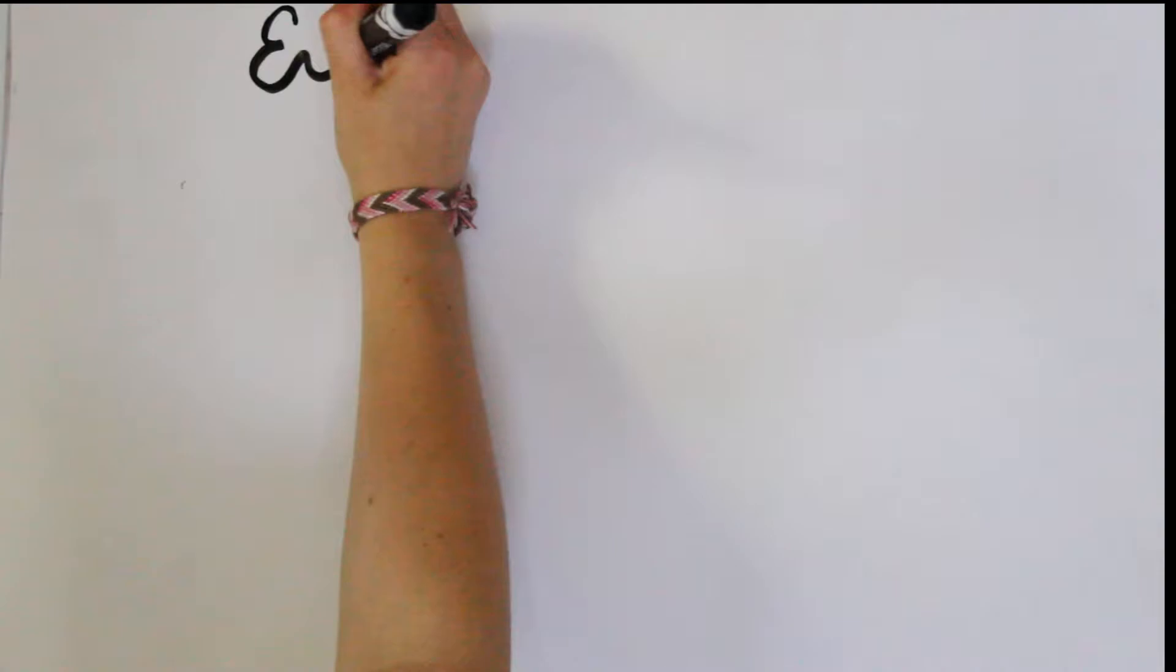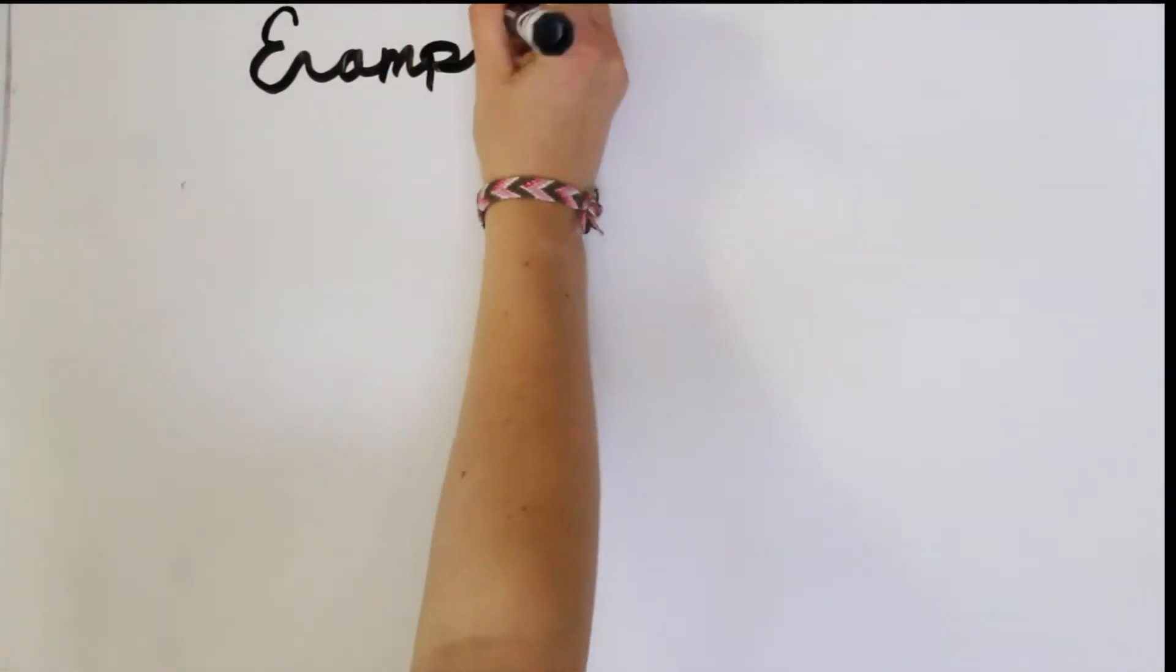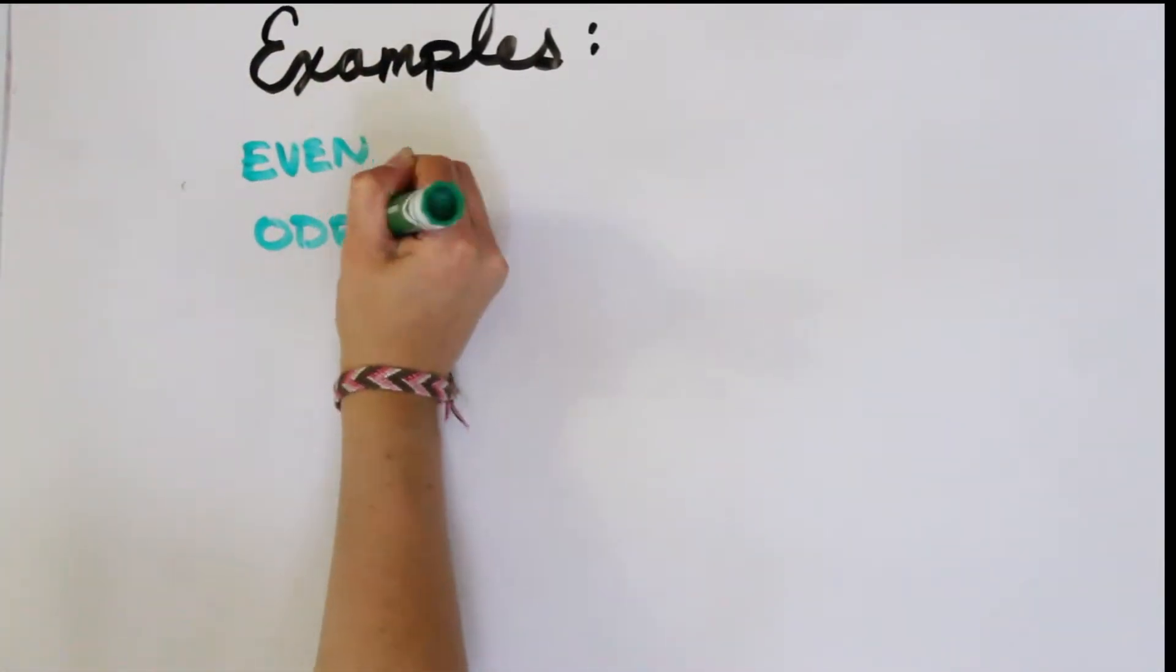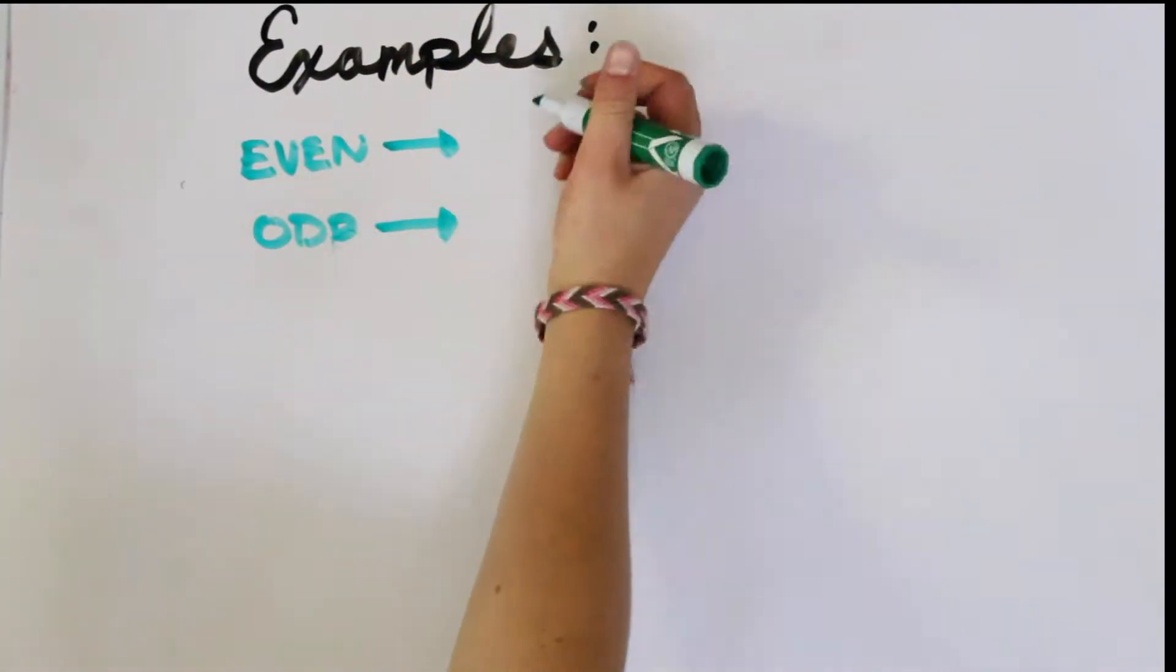There are a lot of examples of ways you've probably encountered mod in your life already. One of the most simple to understand is even and odd numbers. We all know the even numbers 2, 4, 6, and so on have a remainder of 0 when divided by 2.